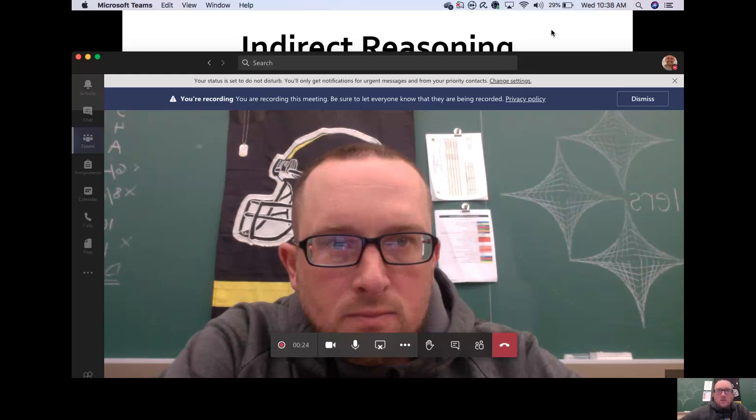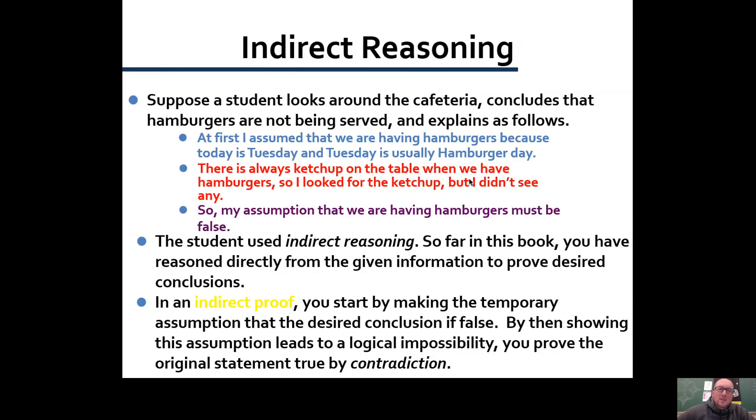This is the second video on section 5-6. We're going to look at indirect reasoning. Let's suppose a student looks around the cafeteria and concludes that hamburgers are not being served and explains as follows: At first I assumed that we are having hamburgers because today is Tuesday and Tuesday is usually hamburger day. There's always ketchup on the table when we have hamburgers.